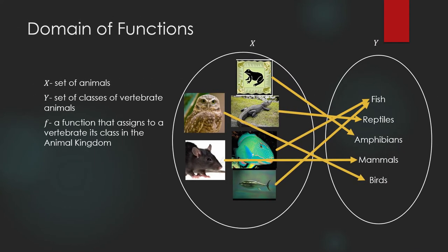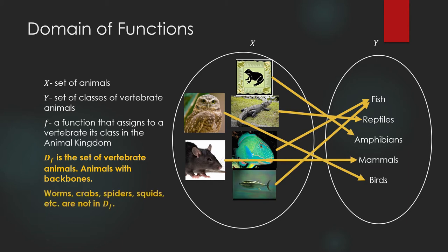Let us go back to the example from our last lesson. This is a function that assigns to a vertebrate its class in the animal kingdom. The domain of this function is the set of all vertebrate animals — animals with backbones. Animals which are not vertebrate animals, which we call invertebrates, are not elements of the domain of this function.